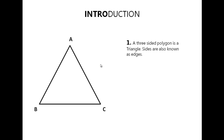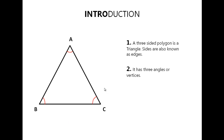A triangle has three sides or three edges. In this triangle, AB, BC, and AC are the three sides or edges of the triangle. A triangle also has three angles or vertices. In this triangle, angle A, angle B, and angle C are the three angles or vertices of the triangle.